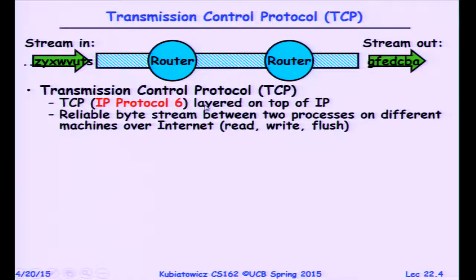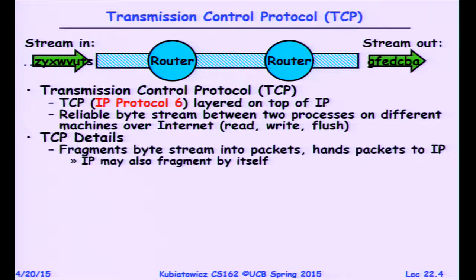TCP is IP protocol 6 — you'd see a 6 in that 8-bit field. It's a reliable byte stream between two processes on different machines over the Internet. Since we're going from process to process rather than machine to machine, there's not just an IP address on either side — there's also a port to identify the application. Details: the data gets fragmented into reasonable chunks at the MTU size (maximum transfer unit). Each link can have a different MTU, so packets can get fragmented down to the smallest unit along the path.